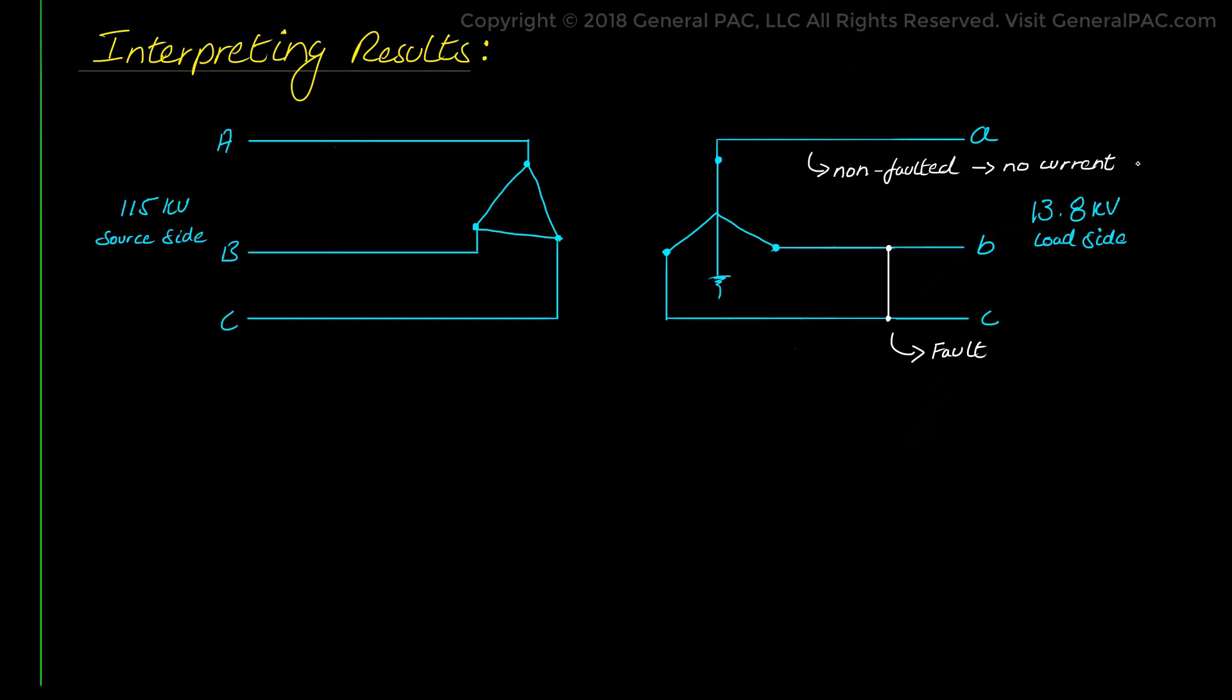Now when it comes to voltage quantities at the point of the fault, we proved by hand that phase A voltage at the point of the fault on the 13.8 kV system is the normal operating quantity, meaning that it is 13.8 kV/√3, it is 7.96 kV phase voltage.